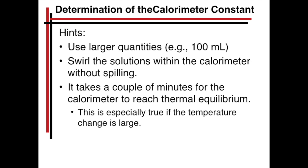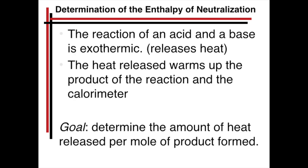You will come out of that with a calorimeter constant. Some hints here: I would use larger quantities. It's easier to get precise data that way. Mixing the two solutions, there's going to be a little while that it takes to mix and a little while for it to reach thermal equilibrium for the calorimeter. If you swirl it, make sure you don't spill it. It may take a couple of minutes to reach that thermal equilibrium. So then, what you get out of that is a calorimeter constant.